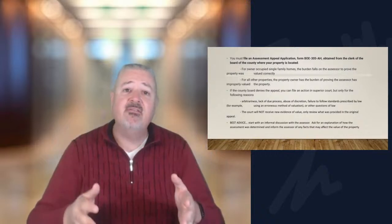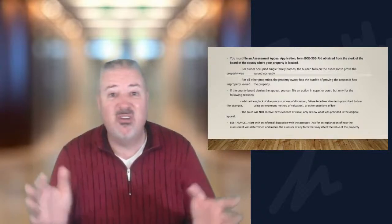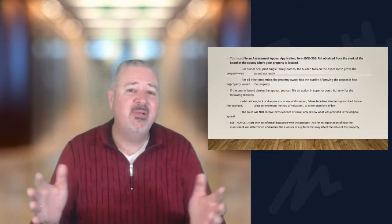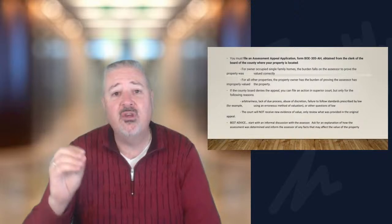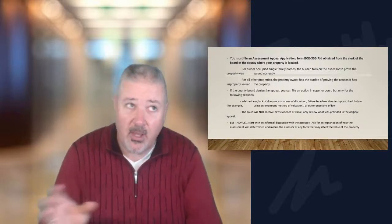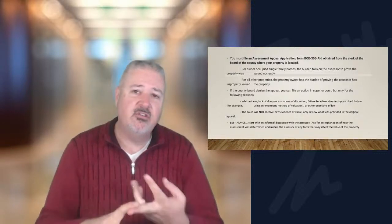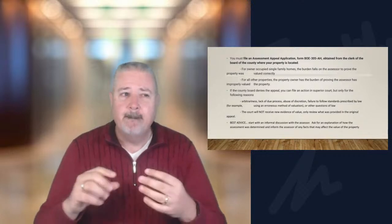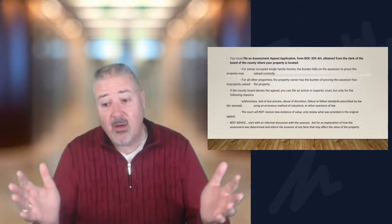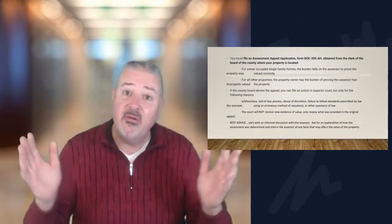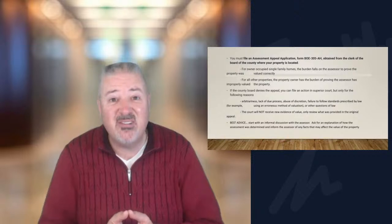The best advice: if it's an owner-occupied single-family residence, you can do a formal appeal because you don't have to do any research. But no matter what, pick up the phone and call the assessor's office, have a conversation, and make sure you're doing that before your county deadline. In Northern California, Placer County has a September 15th deadline. San Francisco and Santa Clara counties also have September 15th. Most other counties in the Central Valley and Bay Area have a November 30th deadline — so you have about three and a half to four weeks left.